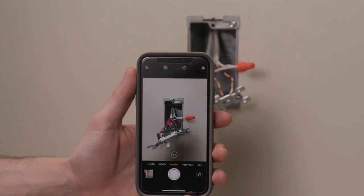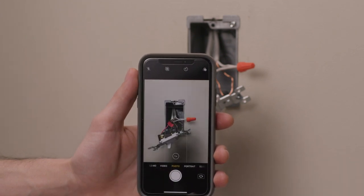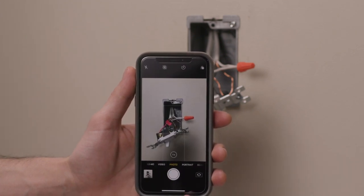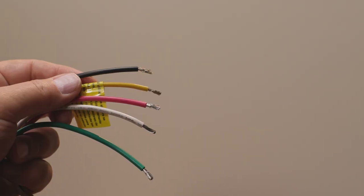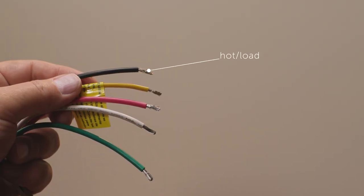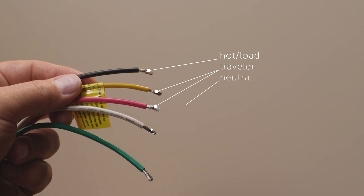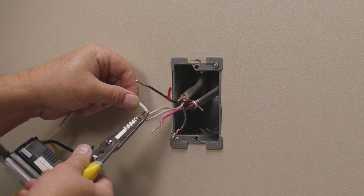Before unscrewing the old three-way switch, it may be helpful to take a quick photo of how it was wired to refer to later. To review, there are five wires to connect to the smart switch: the hot or load wire, the two traveler wires, the neutral wire, and the ground wire. In this video we're replacing the switch closest to the circuit panel with the smart switch.